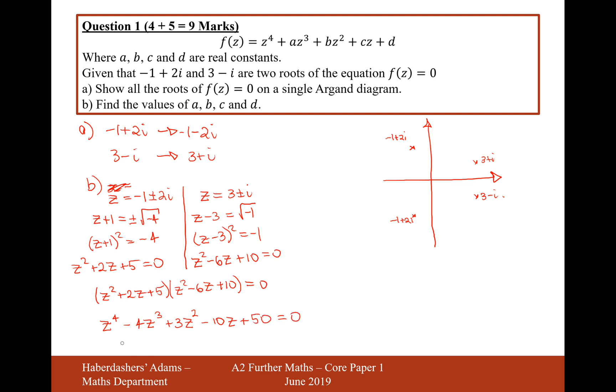And there we are, that's the value of a, b, c, and d: a = -4, b = 3, c = -10, and d = 50. So that's the answer for this question, worth 9 marks in total for question 1. Let's now move on to question 2.